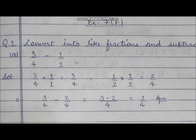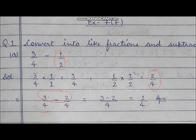Similarly, for subtraction, we will again make the denominators the same and then subtract only the numerators, not the denominators. The denominator is written only one time because they are common. For example: 3 upon 4 minus 1 upon 2. We will convert 1 upon 2 into 2 upon 4 by multiplying by 2, because the denominator here is 4. So we make the denominator 4 as well. Now we subtract: 3 minus 2 is 1 upon 4.